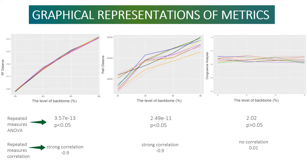According to the values of repeated measures ANOVA, Robinson-Foulds metric and path distance have a statistically significant difference in phylogenetic accuracy at each backbone tree level, as the p-values are less than 0.05, while CADM has no significant difference due to a greater p-value. When it comes to repeated measures correlation values, there is a strong correlation within individual groups of Robinson-Foulds metric and path distance, while CADM has no correlation, as the value is closer to 0.